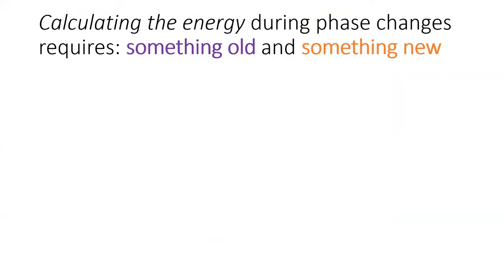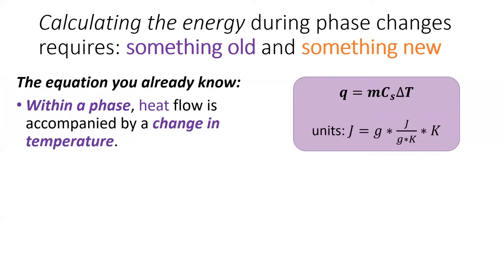What if someone asked you how much energy it would take to boil an ice cube? This process would require a temperature change and two phase changes. We already know the equation used to calculate changes in temperature. It's Q equals mc delta T. We will use this equation to calculate the heat required to change the temperature of a substance when we are not changing its phase.